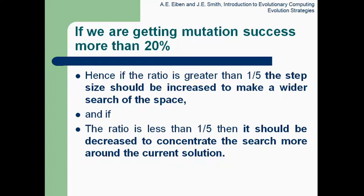What is the one-fifth success rule? If we are getting a mutation success rate of more than 20 percent, then we need to expand the search space — sigma should be increased to make a wider search. If the mutation success rate is less than 20 percent (less than 1/5), then sigma should be decreased to concentrate the search more around the current location.